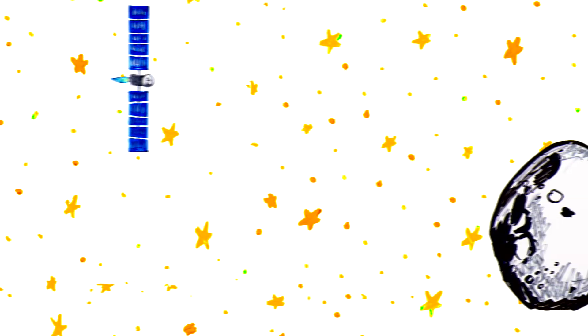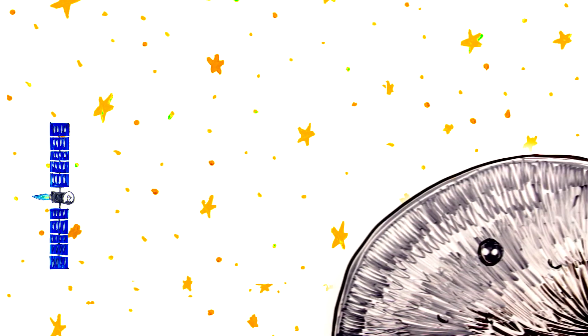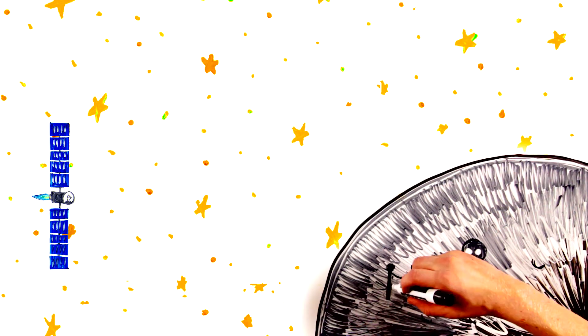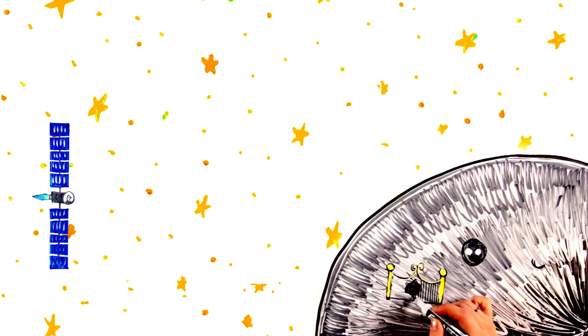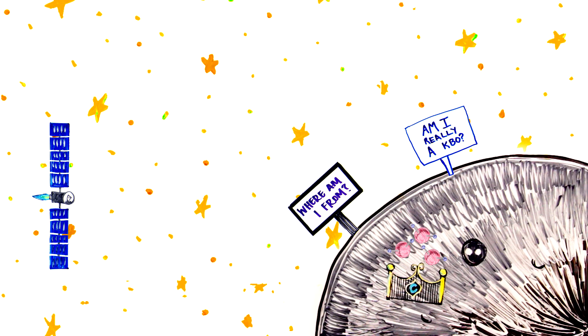NASA's ion-propelled Dawn spacecraft investigated asteroid Vesta from July 2011 to July 2012, and in March 2015 arrived at Ceres, the largest object in the asteroid belt. Scientists have called Ceres the gatekeeper to the history of water in the middle solar system, one-of-a-kind and a game-changer. It seems icy now and may have had an ocean at one time. Will Dawn answer the question of where Ceres formed? Stay tuned.